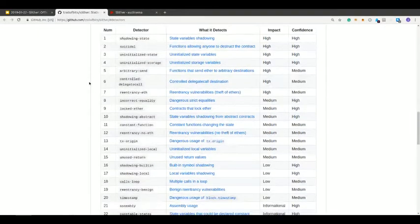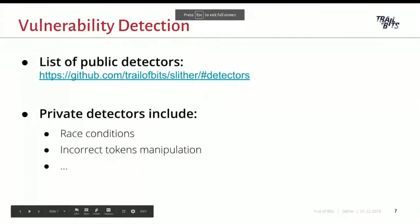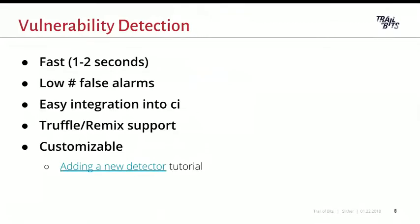We have around 20 or more public detectors, and the full list is shown here. We also have other detectors which are private and used for previous clients, which include race conditions or integer overflow and similar vulnerabilities. Slither is able to analyze a codebase within a second, and the detectors have a low number of false alarms. For a developer, it's really easy to integrate Slither into the pipeline — we have JSON output, Truffle and Remix support, and it's highly customizable. If you have a specific vulnerability you want to detect in your codebase, it's straightforward to add a new detector and integrate everything into your continuous integration system.